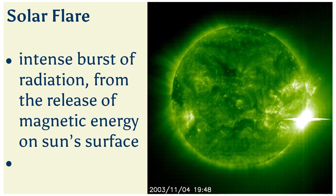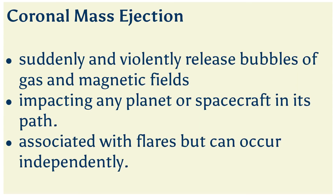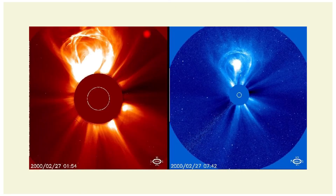Flares are also sites where particles — electrons, photons, and heavier particles — are accelerated. We also have coronal mass ejections, which suddenly and violently release bubbles of gas and magnetic fields that will impact any planet or spacecraft in their path. They are associated with flares but can also occur independently, releasing a billion tons of matter accelerated to several million miles per hour — very dangerous for anything in their path.